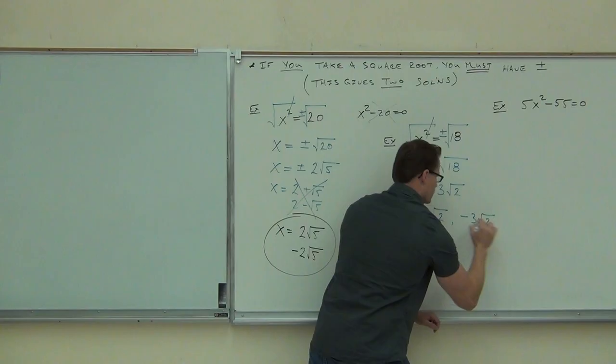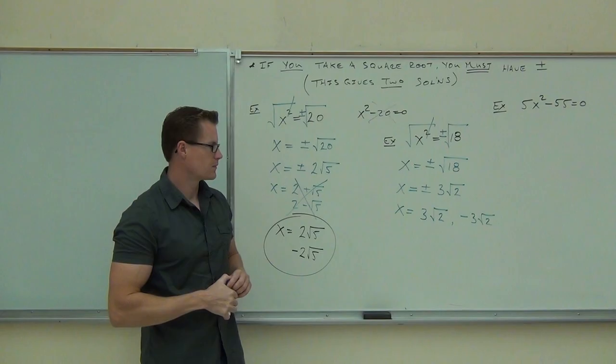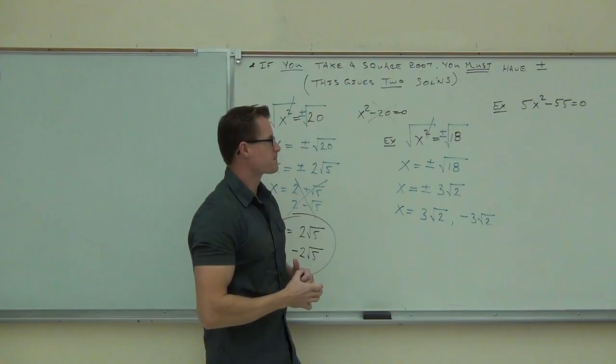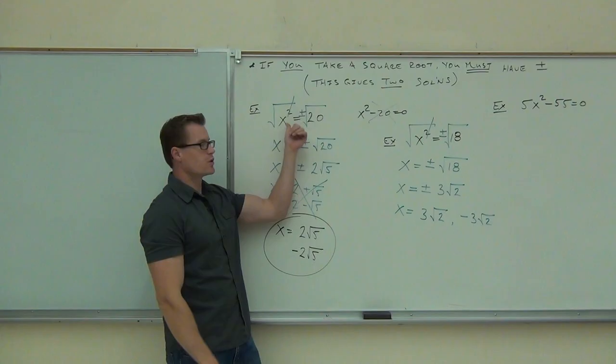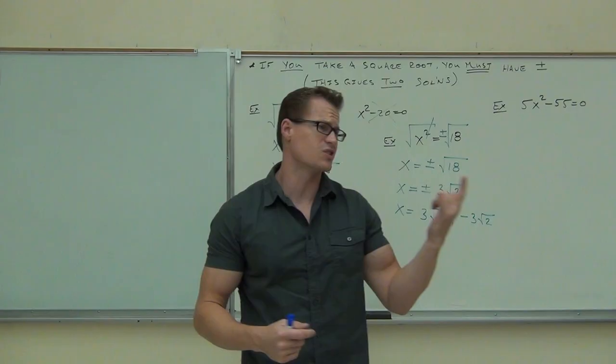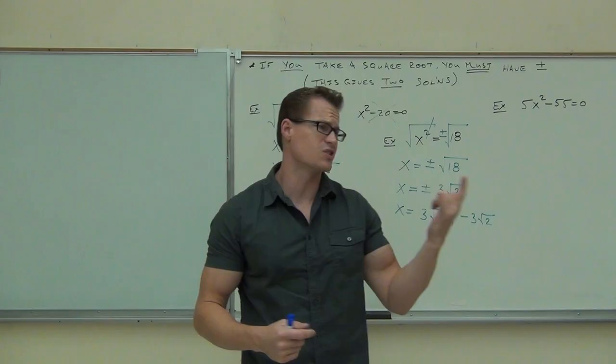By show of hands, how many feel okay with what we just talked about? Good. So now we have a couple of options: if we have a perfect square, we can get everything to one side, factor it. But now we also have another option — take a square root of both sides and solve it that way, and still get our two solutions.